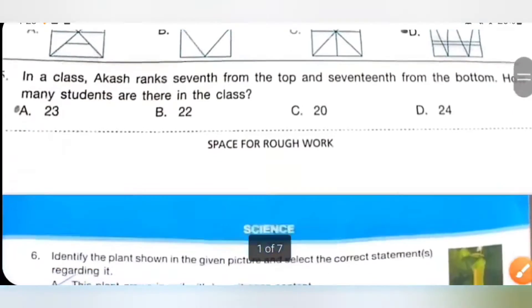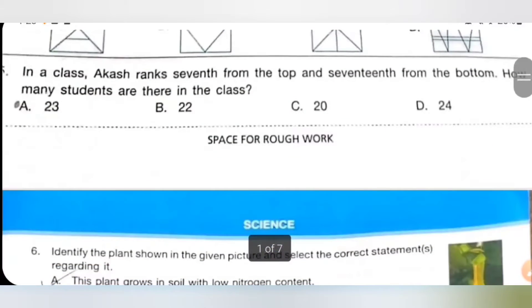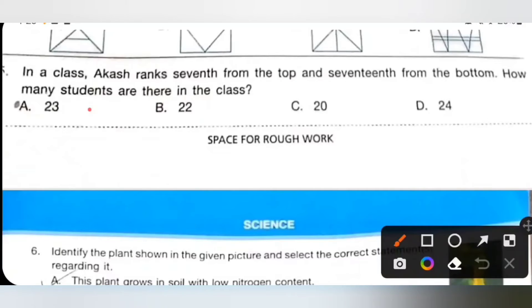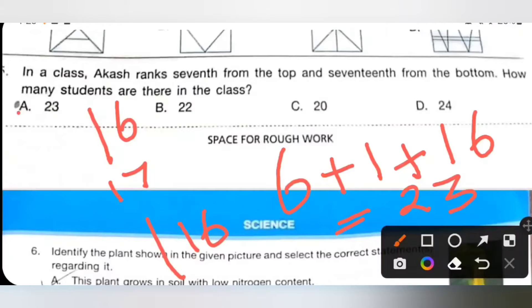Fifth one: In a class, Akash ranks 7th from the top and 17th from the bottom. So from the top, his rank is 7th, so before him 6 students are there. And from the bottom, total 16 students are there. So how many students are there in the class? In the top 6 students, plus he, Akash, plus down 16 students, so total 23 students are there. Option A is the correct answer.